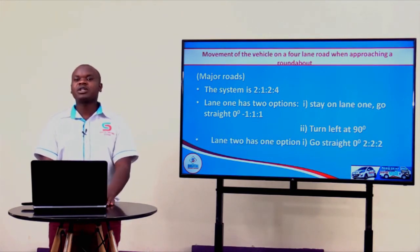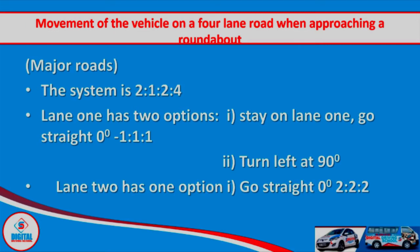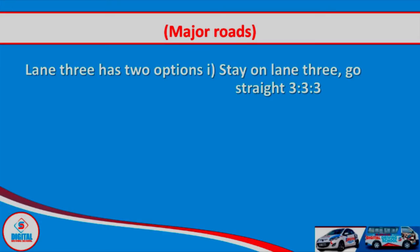Lane number three has two options. The first option is to go straight — enter lane three, maintain it, and exit at lane three. The second option is to turn to your right. When turning right from lane three, you will be exiting to a minor road. A minor road is a road which has three or less lanes. Our minor road in the model town board has three lanes and our major road has four lanes. To avoid confusion or collision when exiting, vehicles in lane number three doing the second option — turning right — are supposed to exit at lane number two.